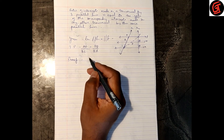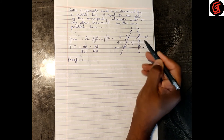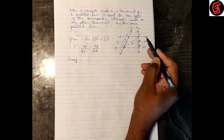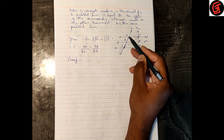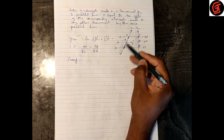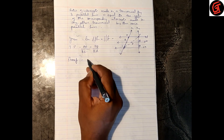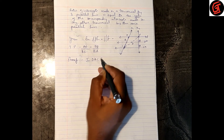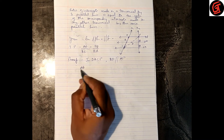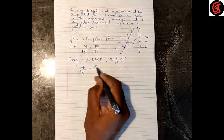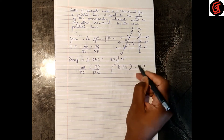In triangle ACP, BD is parallel to AP because line M is parallel to line N, which is given. So by the Basic Proportionality Theorem, AB upon BC is equal to PD upon DC. Let this be statement 1.